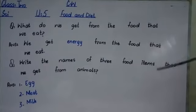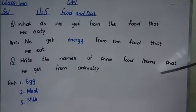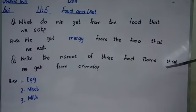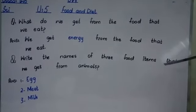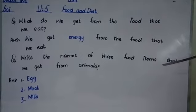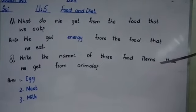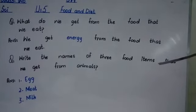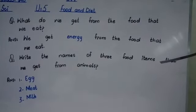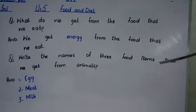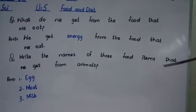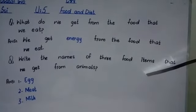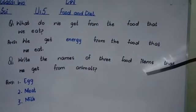Question 2: Write the names of 3 food items that we get from animals. First: egg — we get eggs from animals.